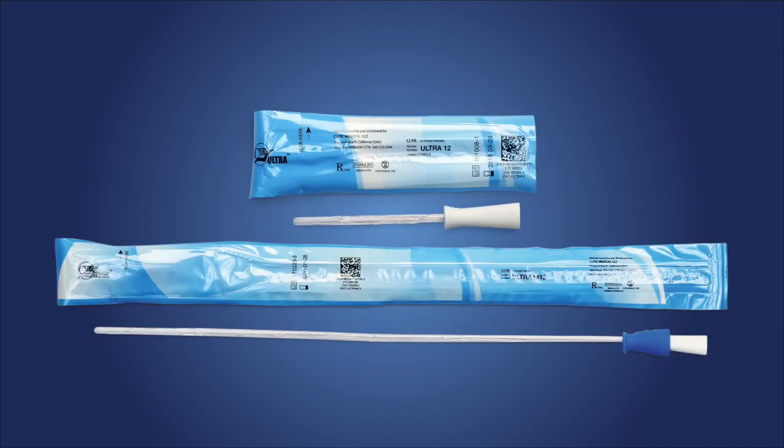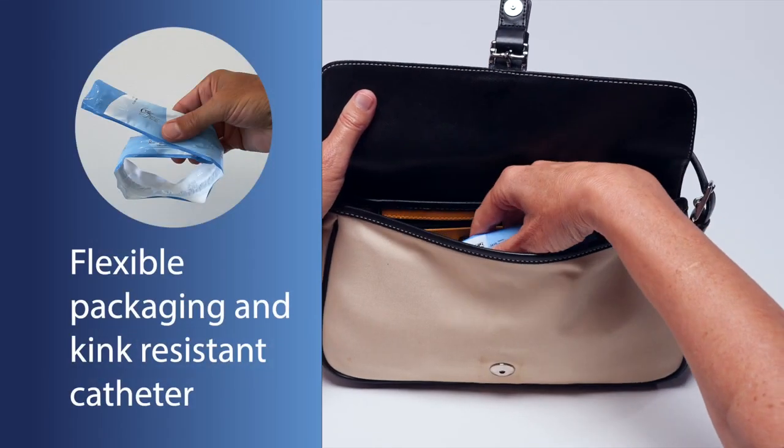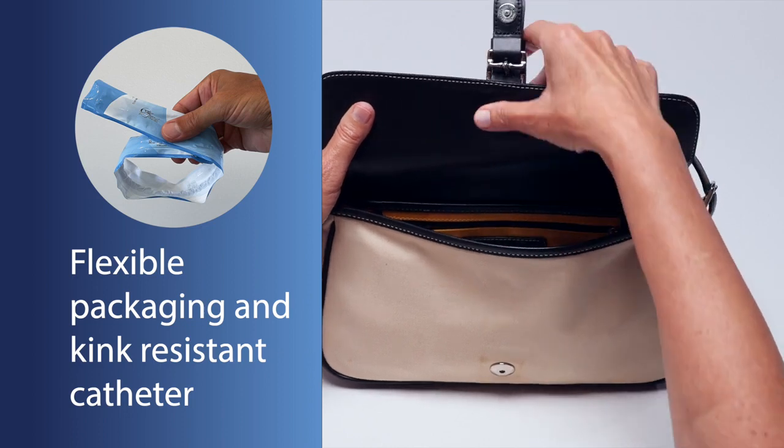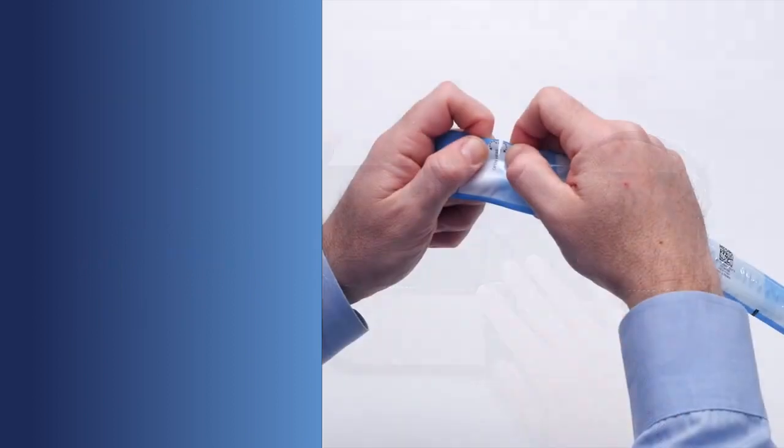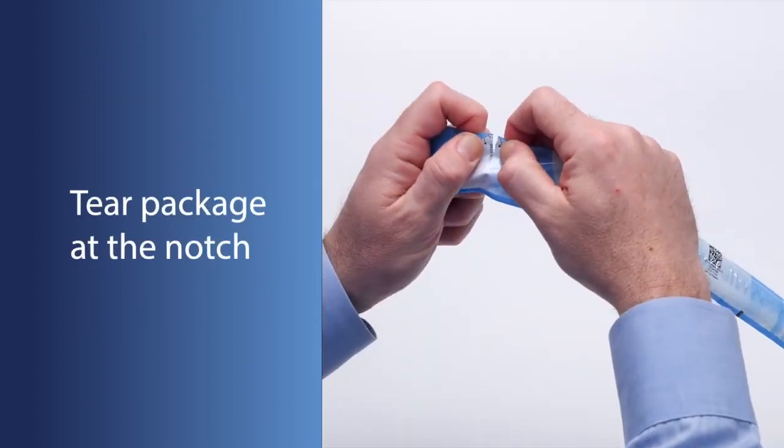The Cure Ultra is offered with a straight tip for women. Tip options for men include coude and straight tip. The small, flexible packaging and kink-resistant catheter make the Cure Ultra conveniently portable. With clean hands, tear an opening in the Cure Ultra package at the notch.